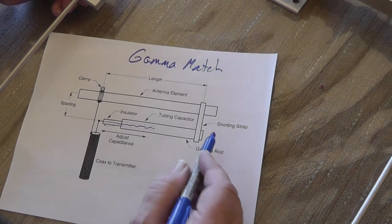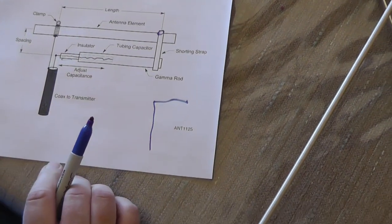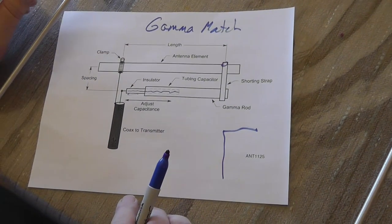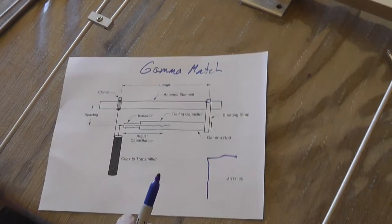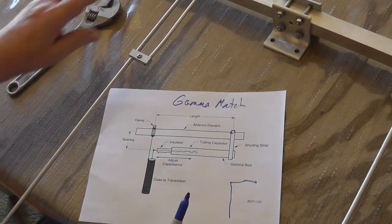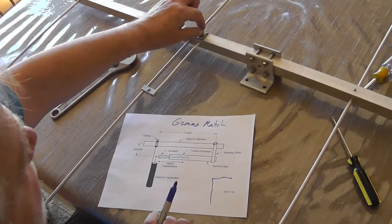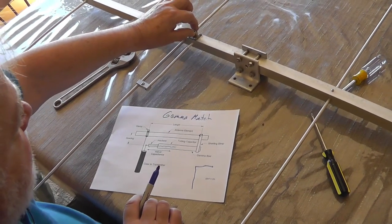And then there's a little shorting strip which takes it over to the antenna. This can give you an almost perfect one-to-one match if you set it up right. So you've got a balanced system and an unbalanced feed line.